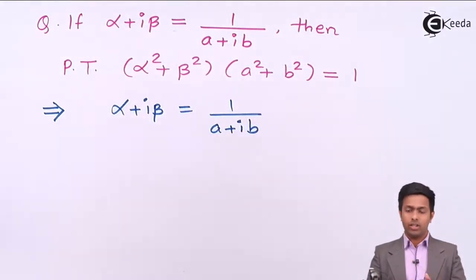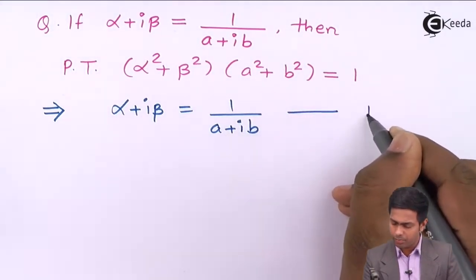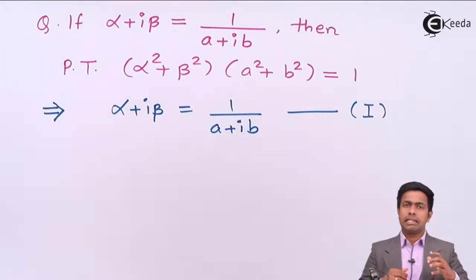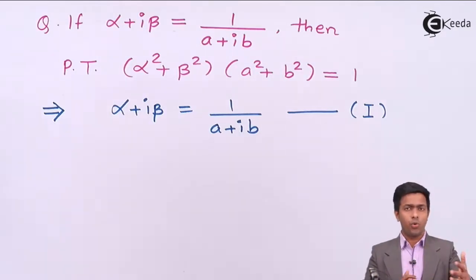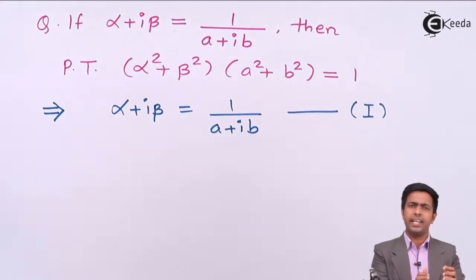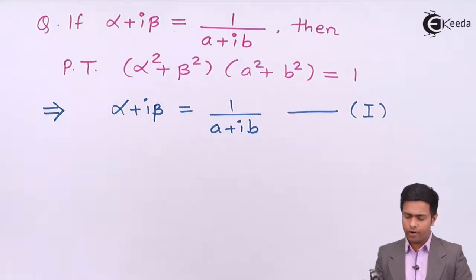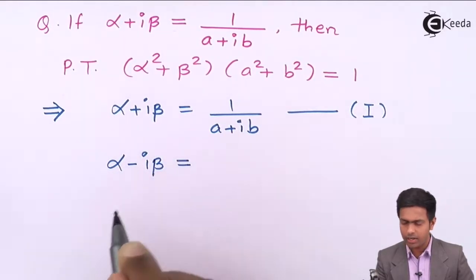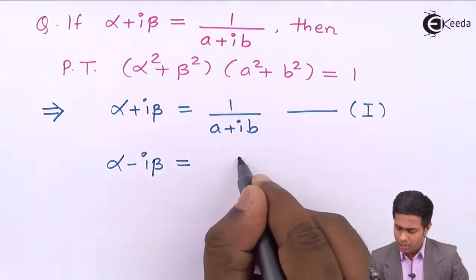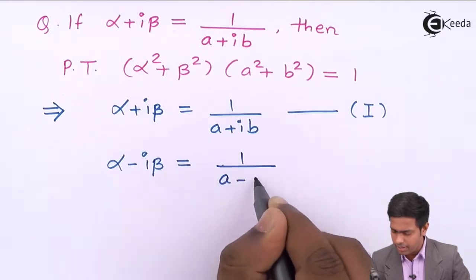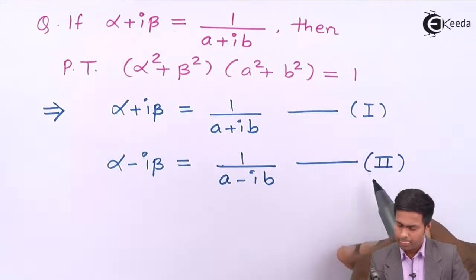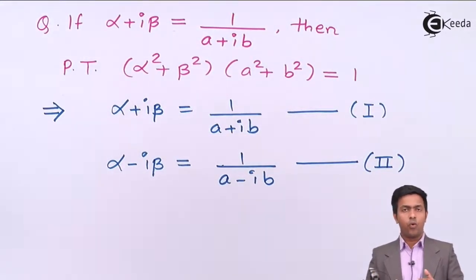I'll call the given expression equation number one. We have learned that the conjugate of a complex number differs from the original only in the sign of the imaginary part. So the conjugate of alpha plus i beta will be alpha minus i beta, and that will be equal to 1 upon a minus ib. I'll call this equation number two.